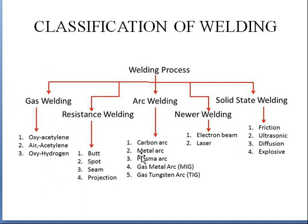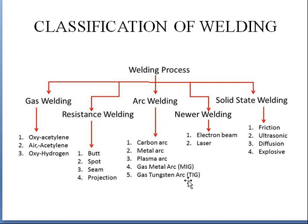Next is resistance welding, which includes butt welding, spot welding, seam welding, and projection welding — we will cover all of these in upcoming slides. Next is arc welding, which includes carbon arc, metal arc, plasma arc, and gas arc welding — also called MIG welding or Metal Inert Gas welding. Next is Gas Tungsten Arc Welding, also called TIG welding or Tungsten Inert Gas welding. Electron beam welding and laser beam welding are unconventional processes, referred to as newer welding processes.